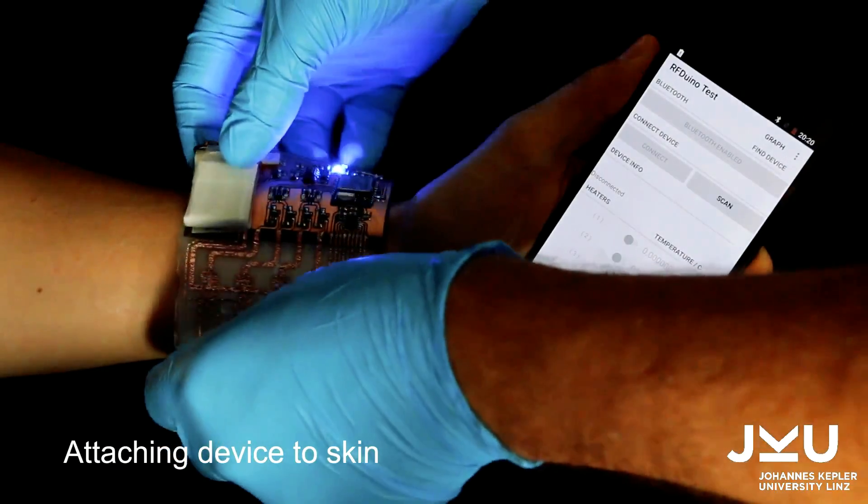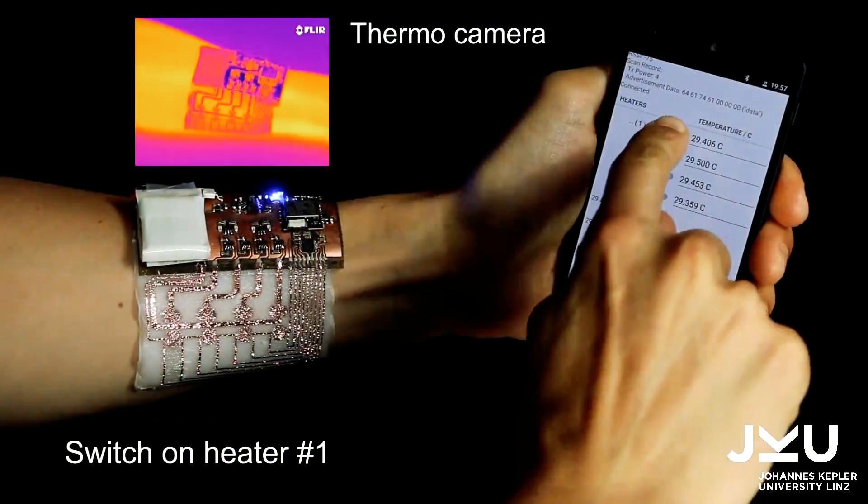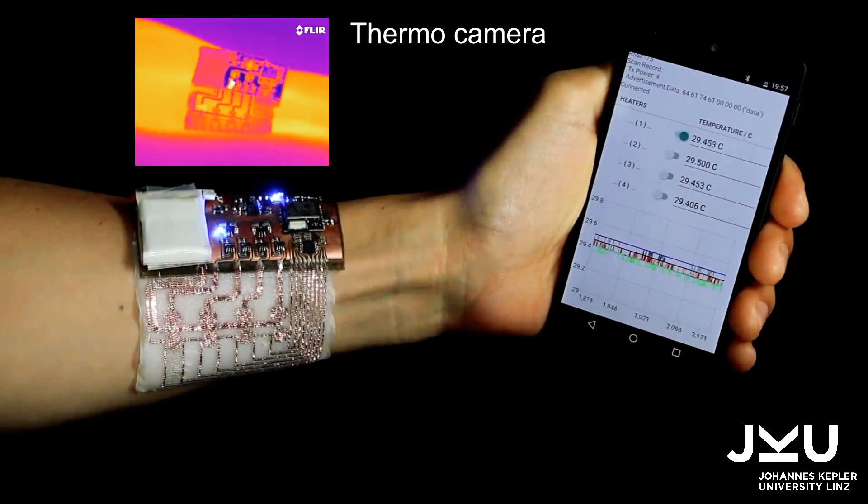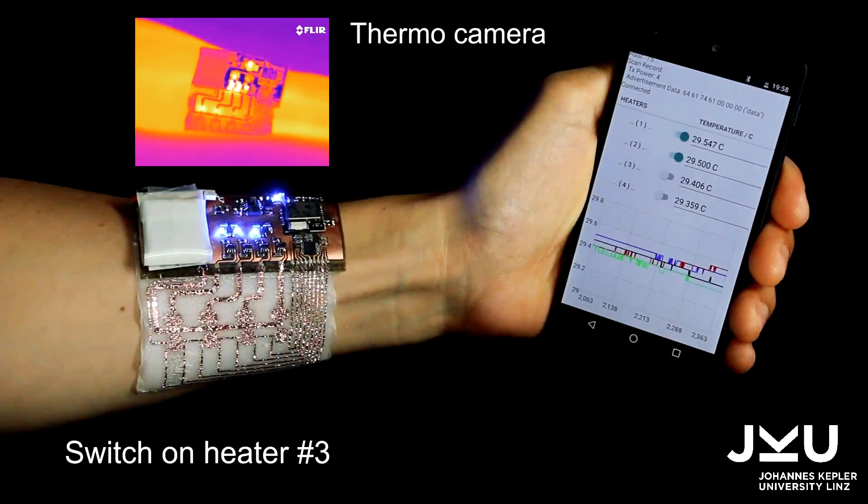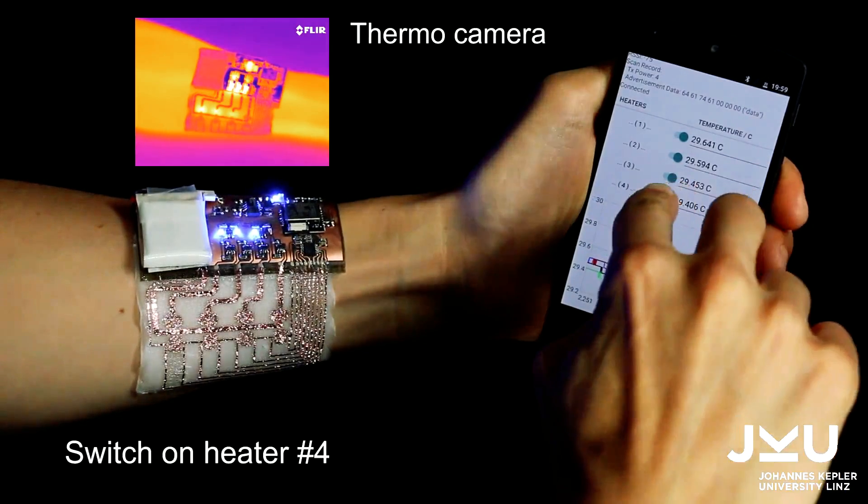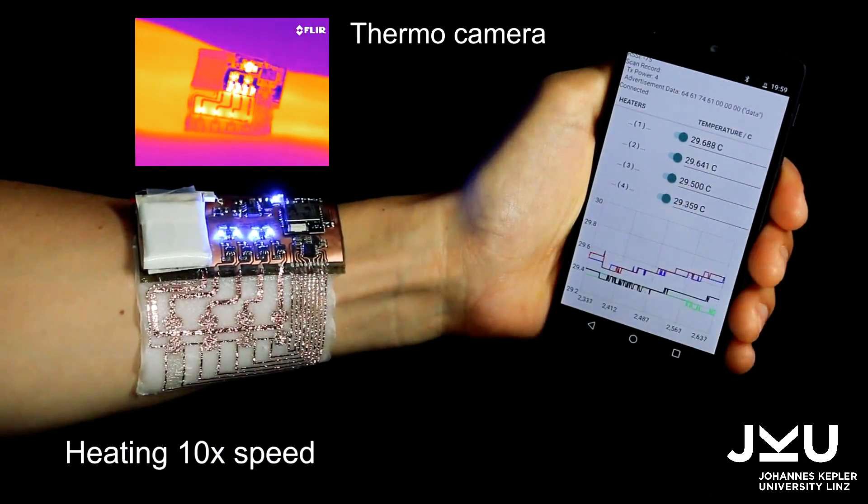Next, researchers built several prototypes using this glue. An electronic skin complete with battery, Bluetooth, processor, heaters, and temperature sensors. The components are bonded onto a hydrogel, which wraps around the skin.